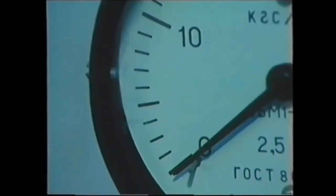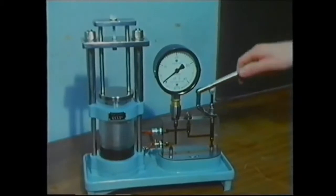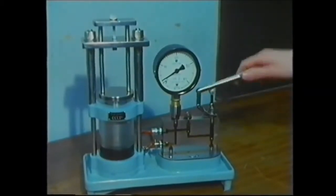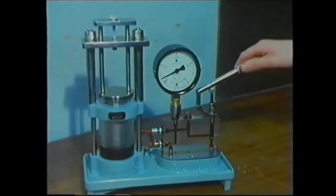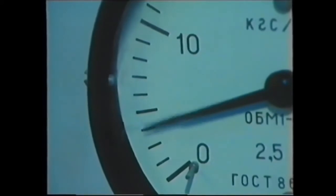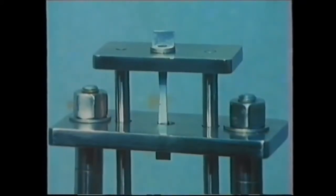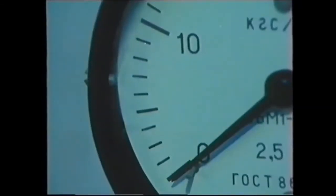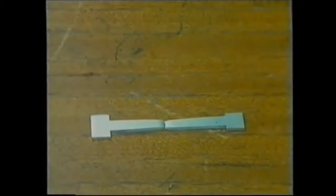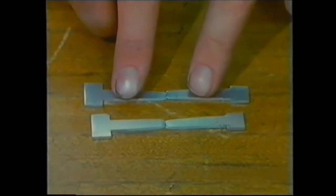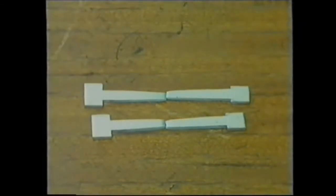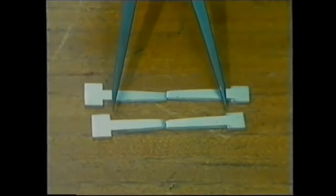That needed a force of about seven units to pull it apart. Now for a recrystallized piece. The force is going to be much less this time. The tensile strength has decreased. If we put the broken bits back together again, we find the recrystallized piece stretched the most. So we've also restored the ductility.